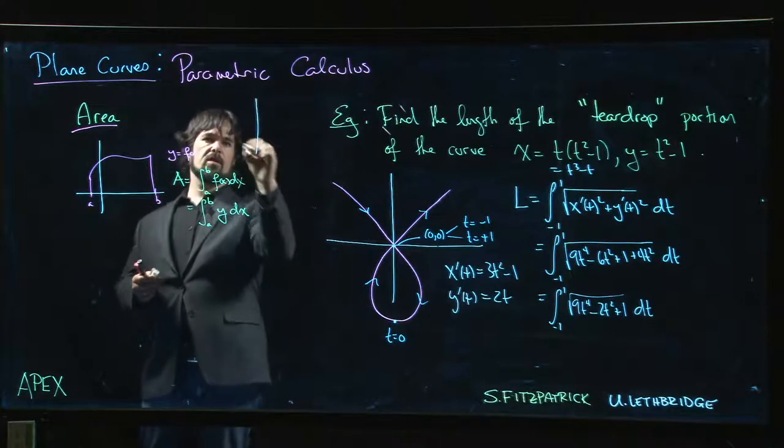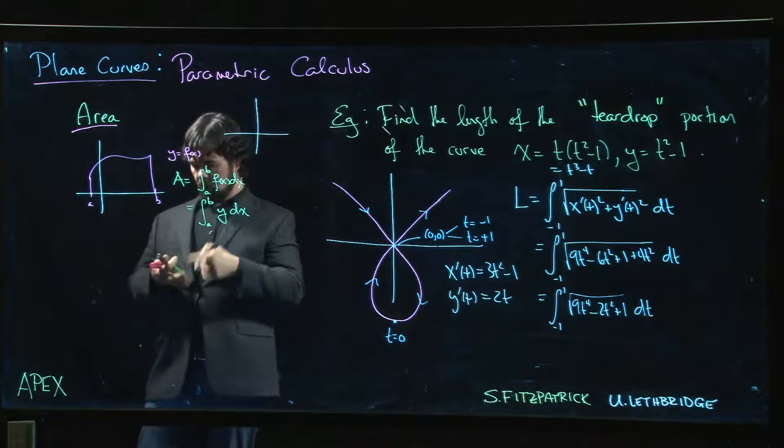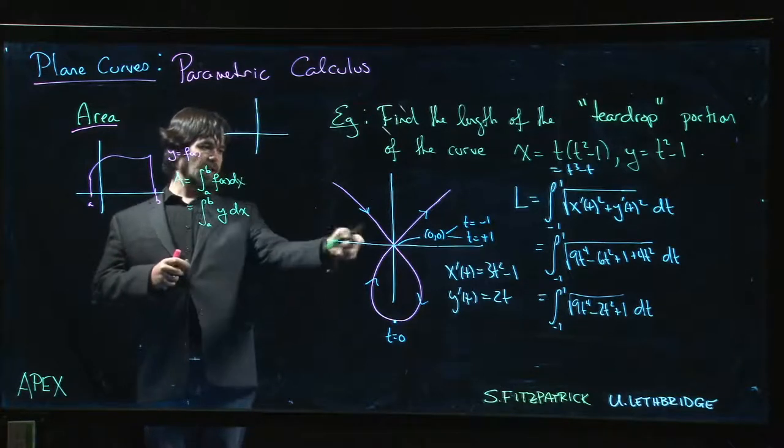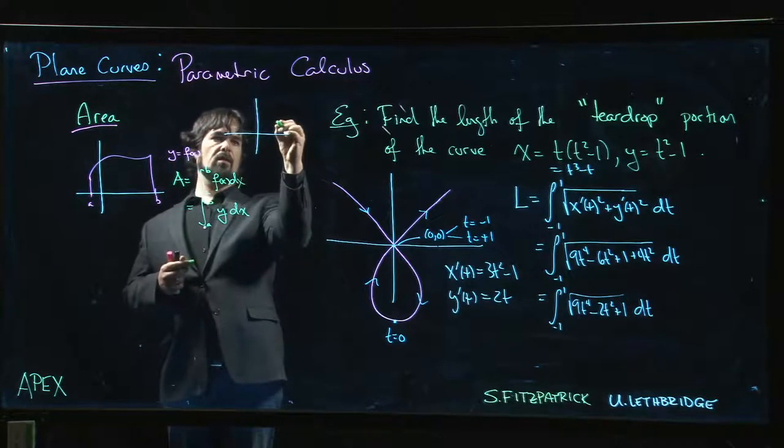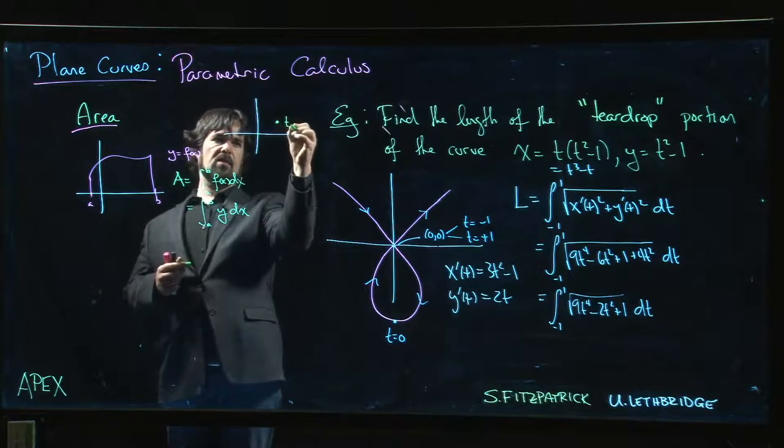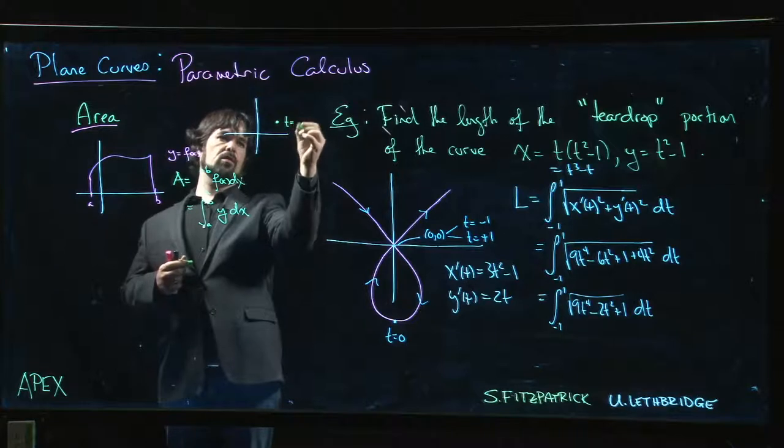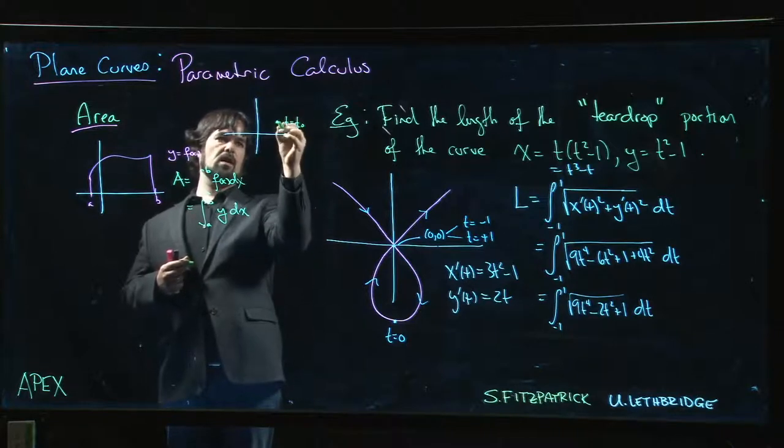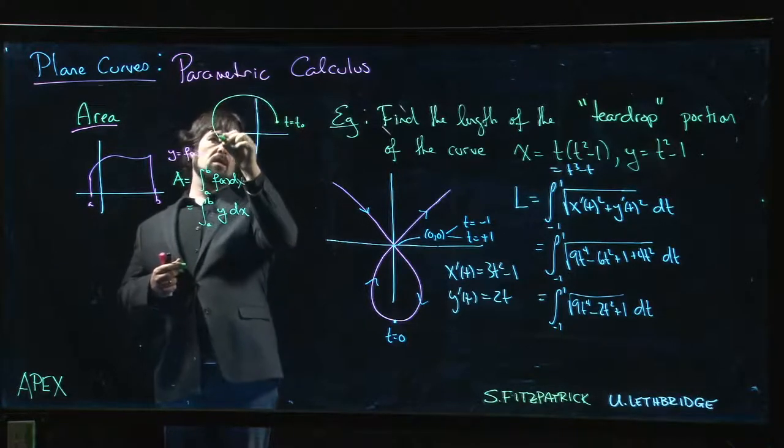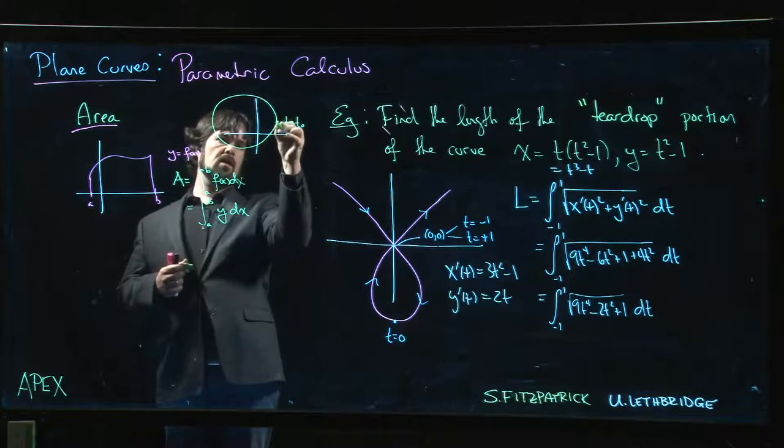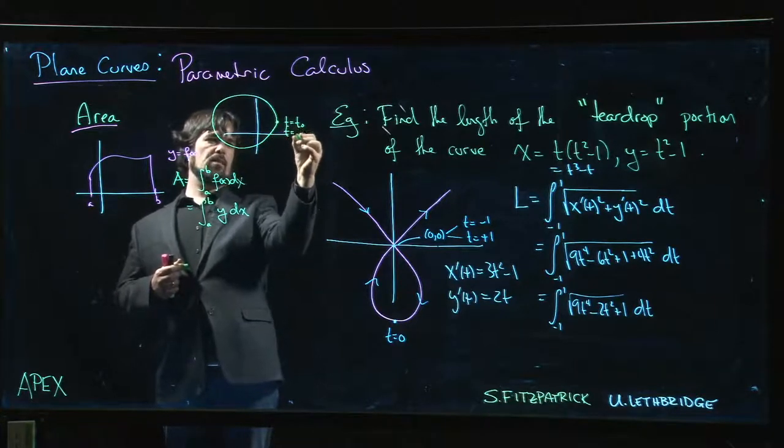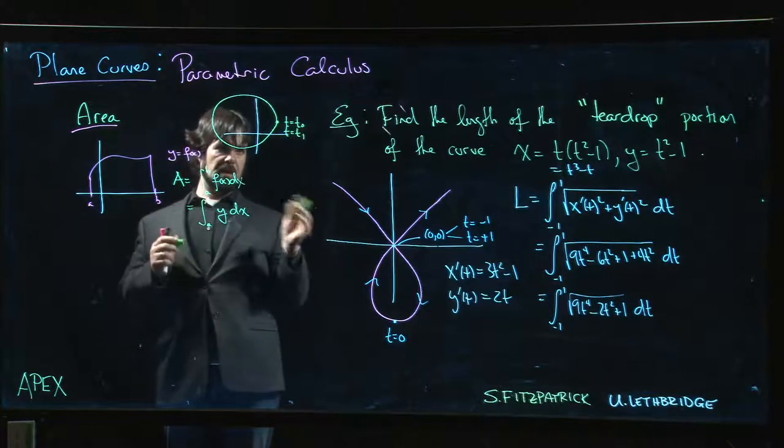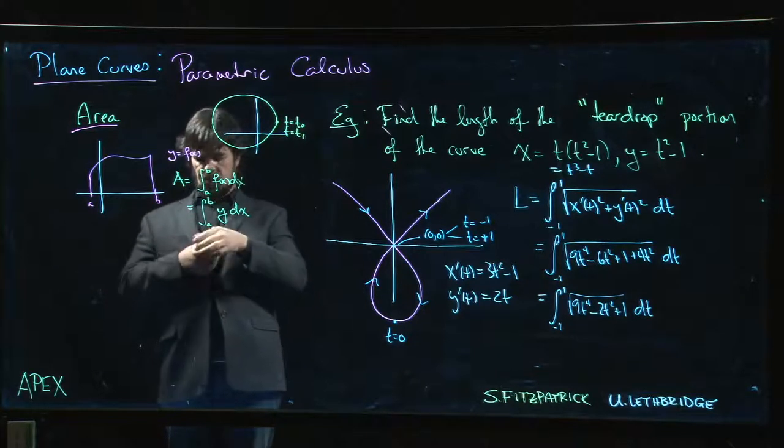You start thinking about what if I did have a parametric curve and it was a closed curve. Now what's interesting is you have a curve with a self-intersection. Maybe you start at some point, here's t equals some initial value t₀, and you go around, you come back and you end and you get back to that same point at some other time t equals t₁.